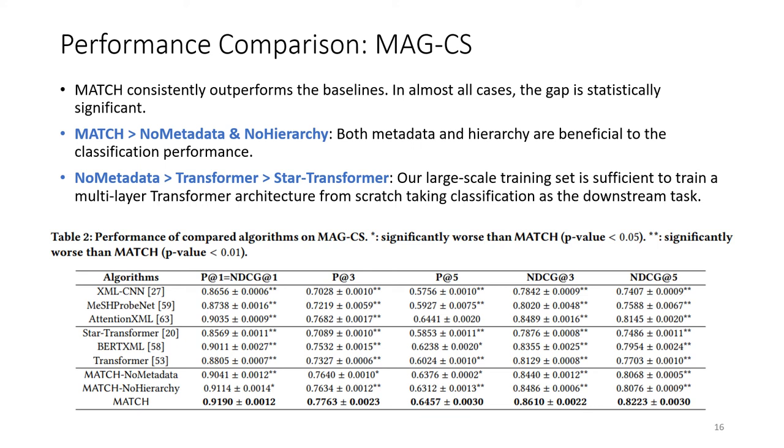Third, even without metadata, our MATCH framework can outperform Transformer and Star Transformer, which also use text only. This indicates that our large-scale training set is sufficient to train a multi-layer transformer architecture from scratch, taking classification as the downstream task.